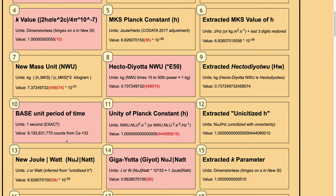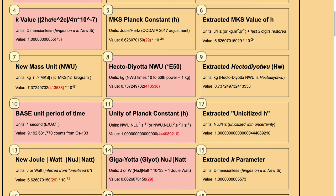The base unit period of time does not change — it is one exact second without any indeterminacy, derived from the hyperfine levels of excitation to the ground state of cesium-133 atoms. The unity of the Planck constant will be achieved by using nulu times nulu squared over second, or nulu times nulu squared over second squared hertz, which is jiggly with the indeterminacy involved.